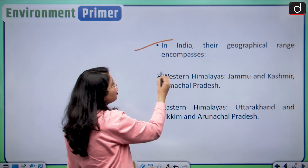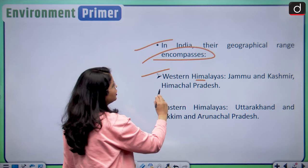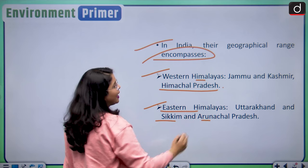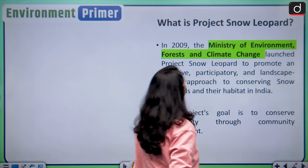In India, their geographical range encompasses the western Himalayas — that is Jammu and Kashmir and Himachal Pradesh — and the eastern Himalayas, such as Uttarakhand, Sikkim, and Arunachal Pradesh.